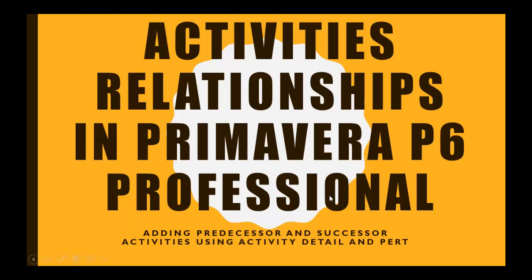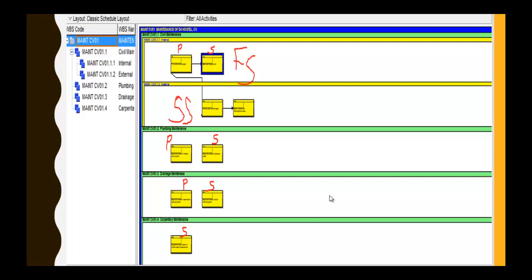There are four types of activity relationships. We have FS, Finish to Start. We have FF, Finish to Finish. We have SS, Start to Start. And lastly we have SF, Start to Finish. The FS relationship means the predecessor must finish before the successor activity can start.